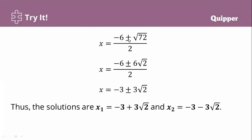Proceed and simplify. We have negative 6 plus or minus square root of 72, because 36 plus 36 is 72, divided by 2. Since 72 is not a perfect square, we find two factors where one is a perfect square: 36 times 2. So the square root of 72 equals 6 square root of 2. We now have (negative 6 plus or minus 6 square root of 2) divided by 2. Dividing: negative 6 divided by 2 is negative 3, and 6 divided by 2 is 3. This is the simplified form.